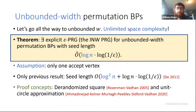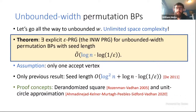To prove our theorem, we use the concept of the derandomized square by Rozenman and Vadhan, and this recent notion of unit circle approximation introduced at FOCS by Ahmadinejad, Kelner, Murtagh, Peebles, Sidford, and Vadhan. We rely very heavily on their results and analysis of this unit circle approximation.